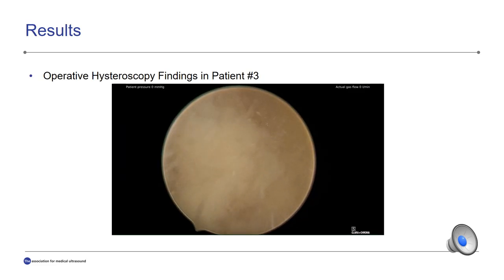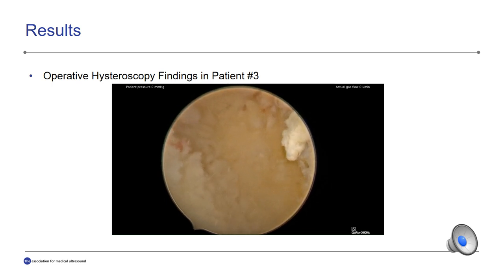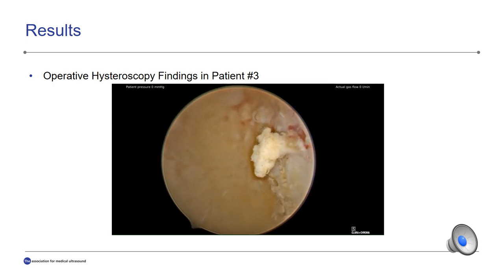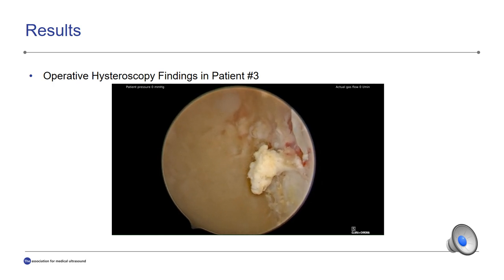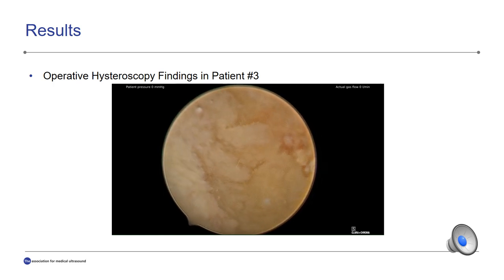Upon review of operative hysteroscopy surgical report and under direct visualization for patient CC, yellow-white appearing endometrium with hair-like projections at the fundus was noted.